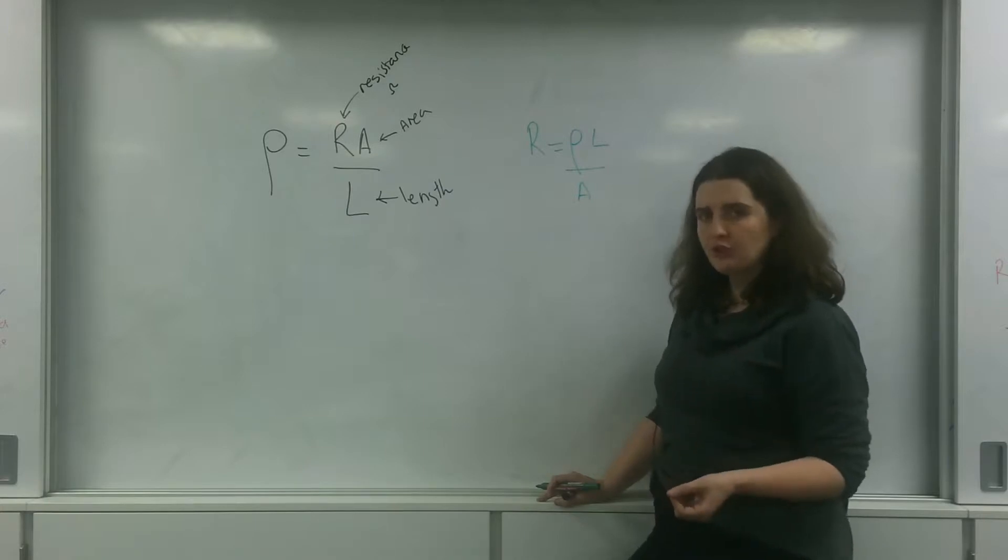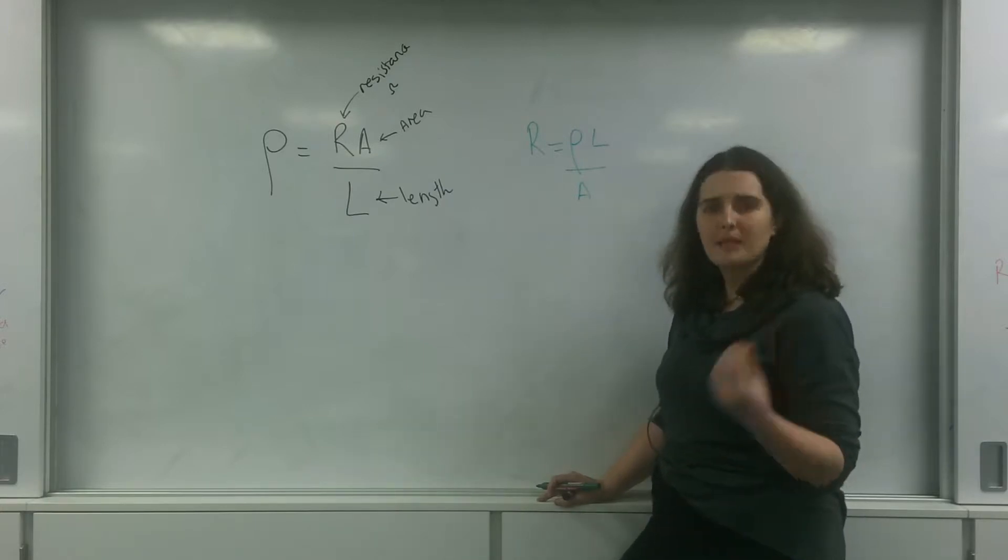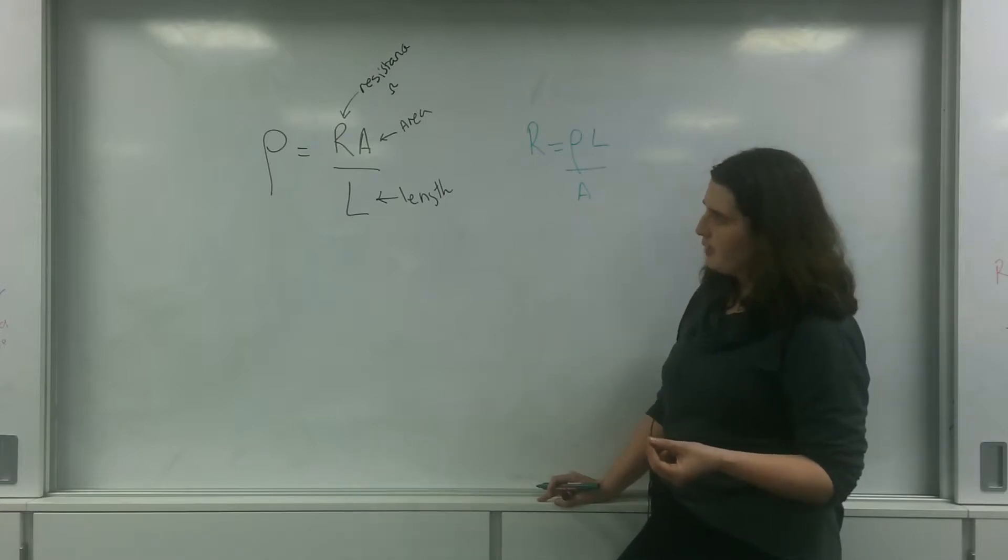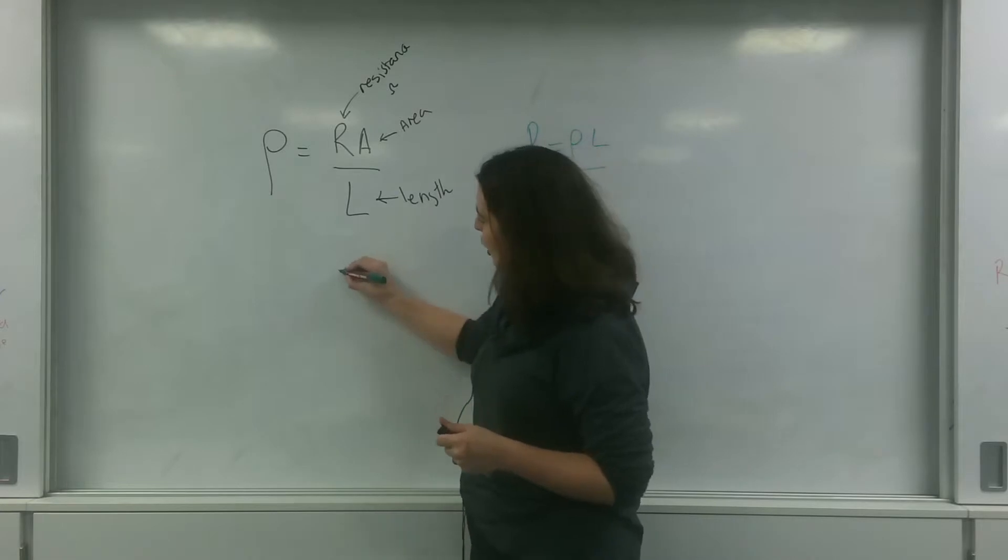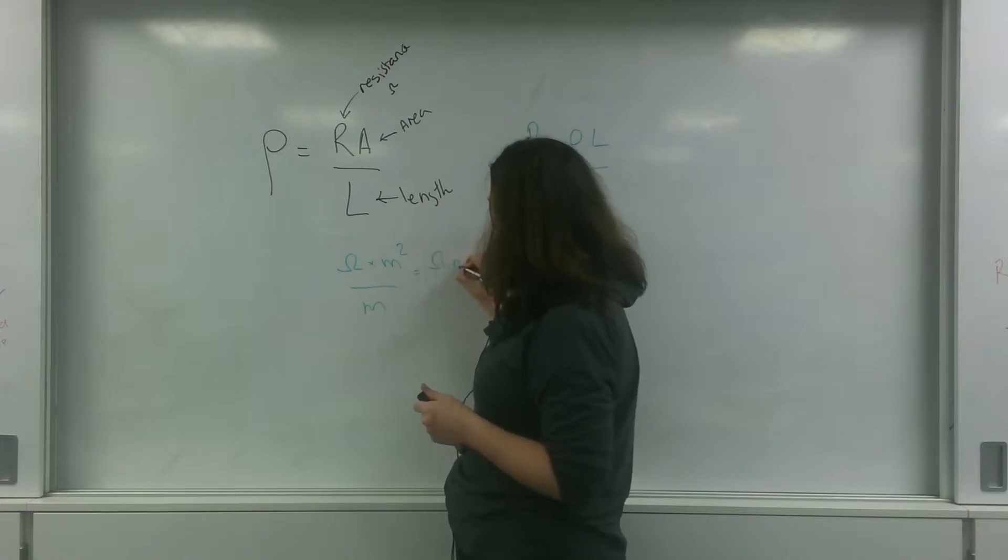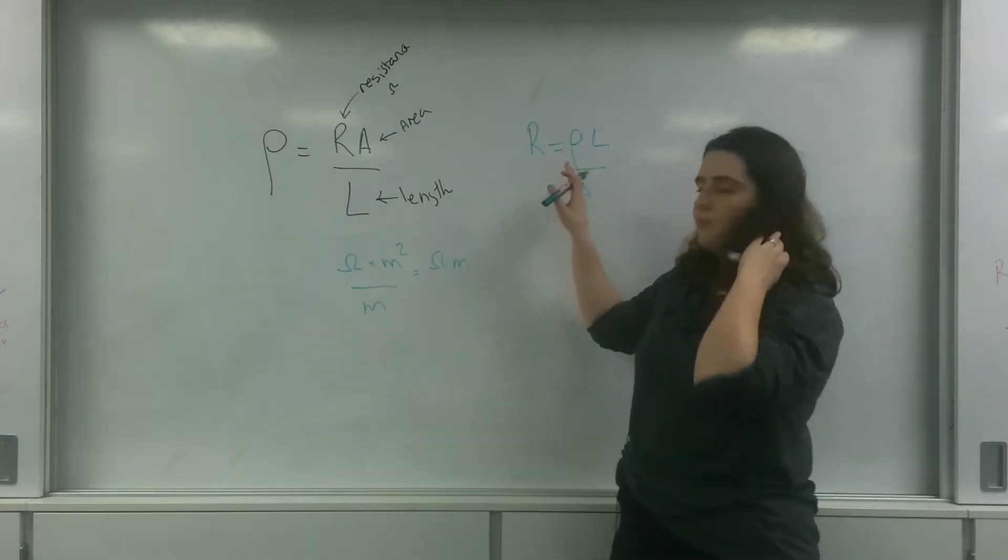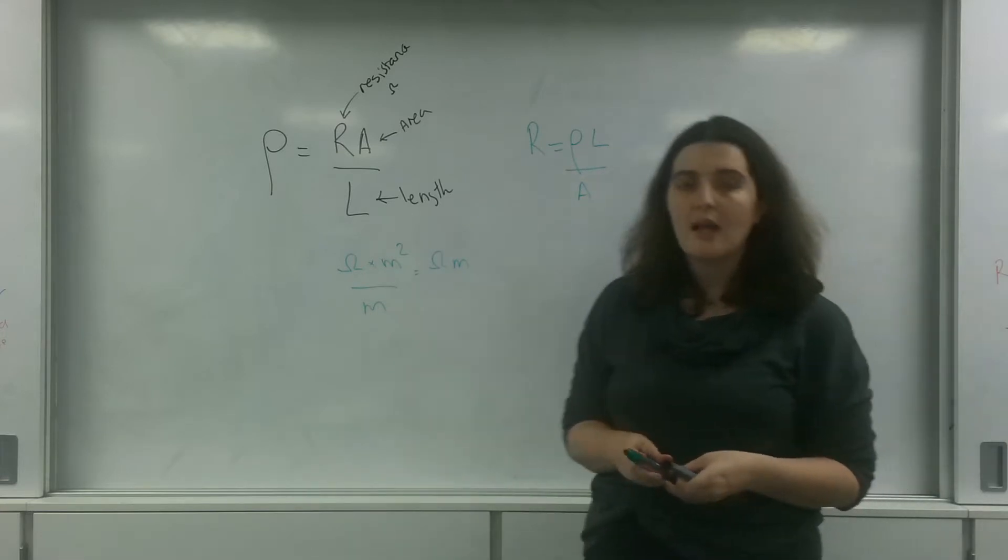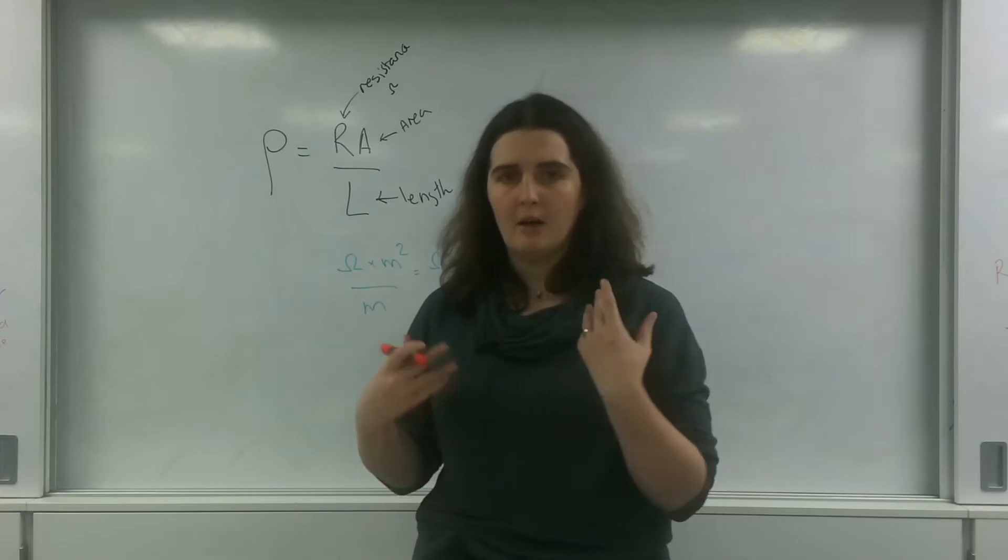As per usual, it's important that the area and the length are in meters. And the units, just to make you aware of resistivity, so it's ohms times meters squared over meters. So it's ohm-meters. And this means that your resistivity must, must, must be, your area and cross-sectional length must be in meters.